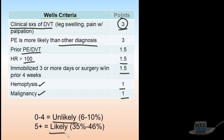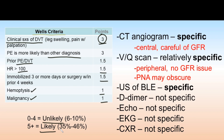Based on your Wells score, you determine which tests to order. These tests are specifically ordered when you're thinking about pulmonary embolism — none are done routinely. You'll never be surprised by a positive PE test; if it comes back positive, it's because you thought about it. Herein lies the real crux of the problem: if you never think about PE, you'll never make the diagnosis.